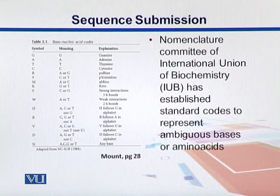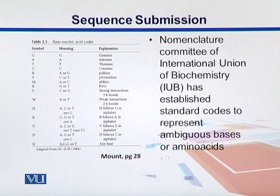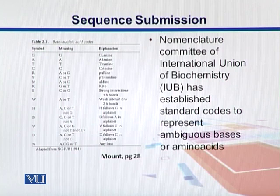At some positions you are not sure whether it is A, C, T, or G, but you are restricted to put just one single letter. So there is an organization, the International Union of Biochemistry, abbreviated as IUB, which has established standard codes to represent those ambiguous bases or amino acids.